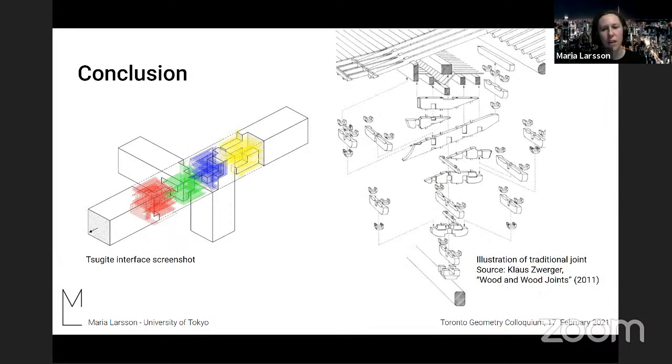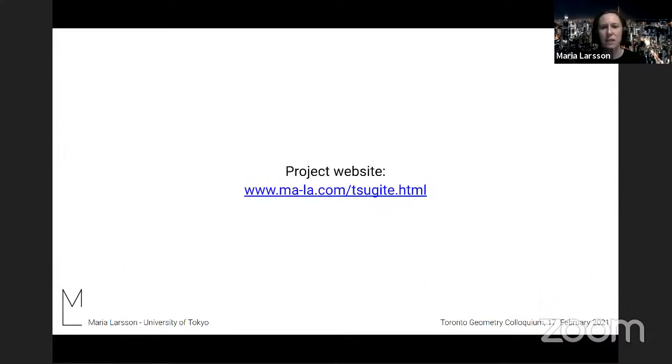So in conclusion, I would just like to show this illustration of a traditional joint on the right and the Tsugite joint on the left to show that there's still a lot of potential to explore more geometries. And I think what we have achieved with Tsugite is maybe a small step towards being able to create something more like traditional joints. So that's all from me today. Please visit the project website. We have a lot more materials and please read the paper if you're interested. Thank you very much.